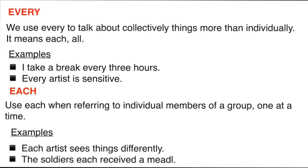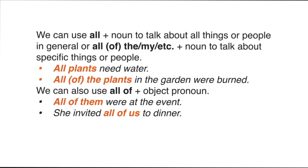When deciding whether to write 'all' or 'all of': we use 'all' plus a noun to talk about all things or people in general — for example, 'All plants need water.' We use 'all of the' or 'all of my' plus a noun to talk about specific things or people — for example, 'All of the plants in the garden were burned.' We can also use 'all of' with an object pronoun — for example, 'All of them were at the event' or 'She invited all of us to dinner.'